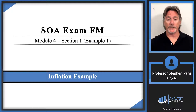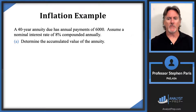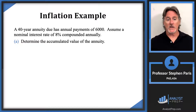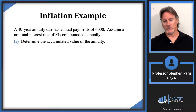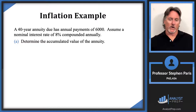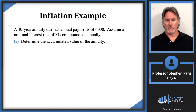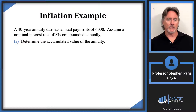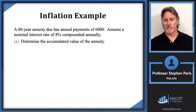In this video we're going to do an example of inflation. We have a 40-year annuity due with annual payments of six thousand, and a nominal interest rate of eight percent compounded annually — so an eight percent annual effective interest rate. Part A is to determine the accumulated value of the annuity, and up to now there's nothing that has to do with inflation. Parts B and C will bring inflation into account, but for right now we're just calculating the accumulated value of this annuity due: 40 payments of six thousand at an eight percent annual effective interest rate.